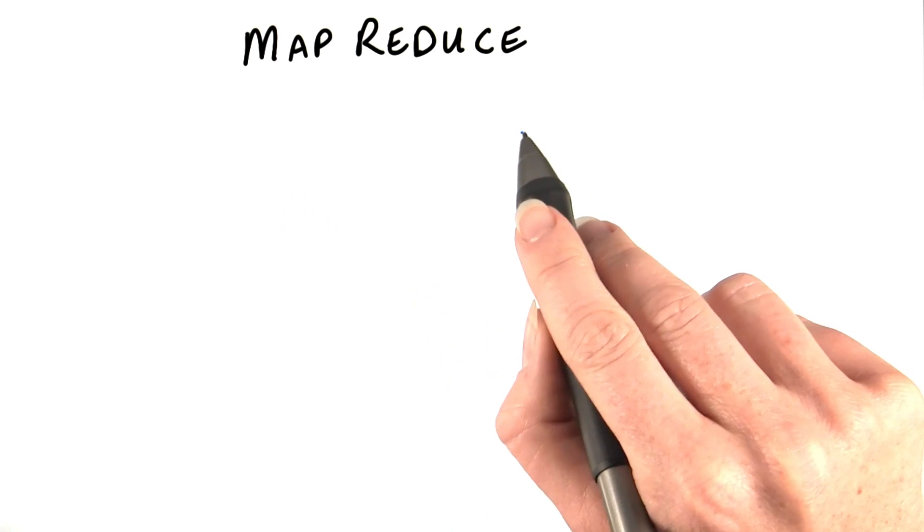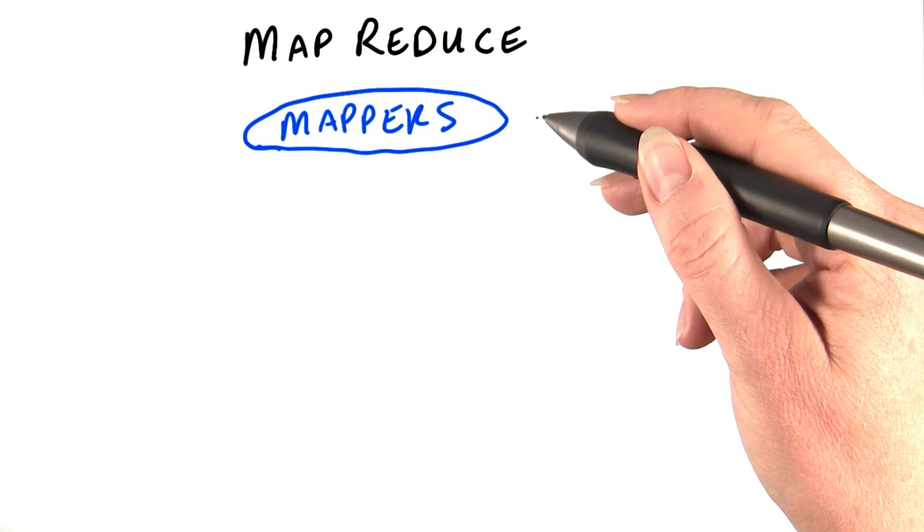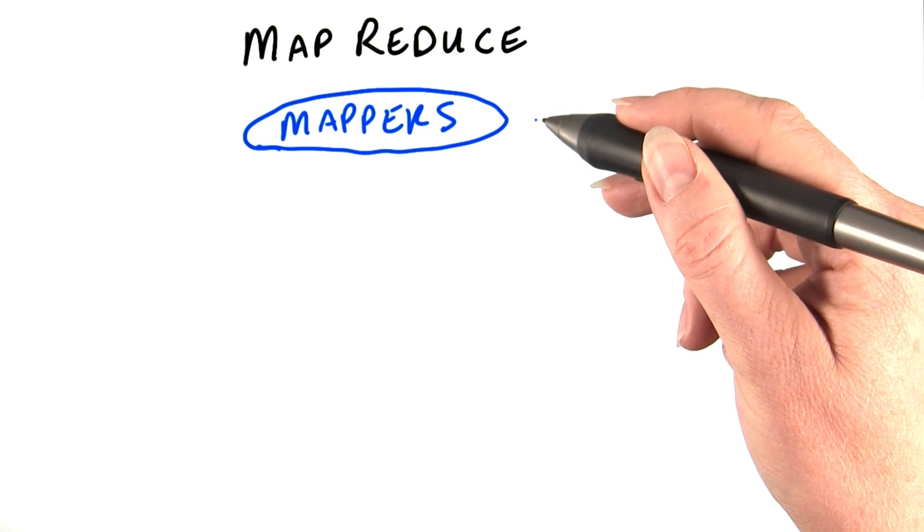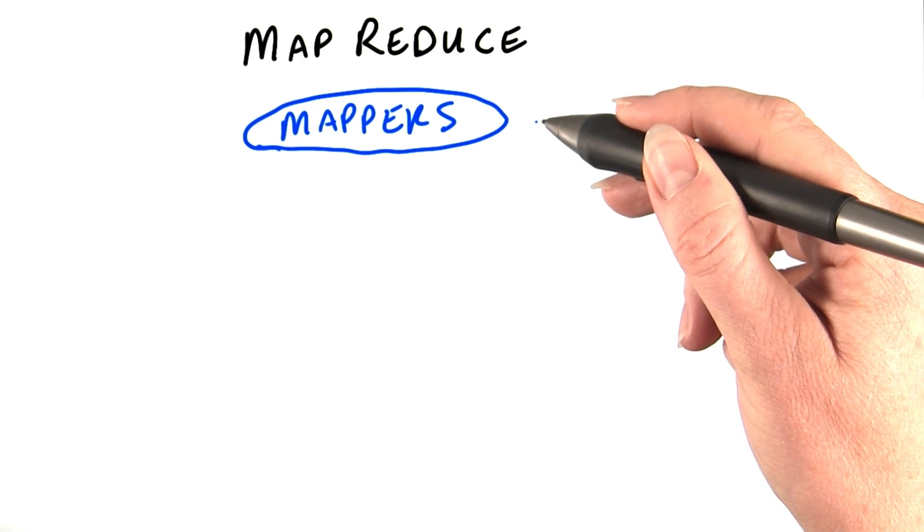And that's how MapReduce works. Let's summarize. The mappers are just little programs that each deal with a relatively small amount of data and work in parallel.